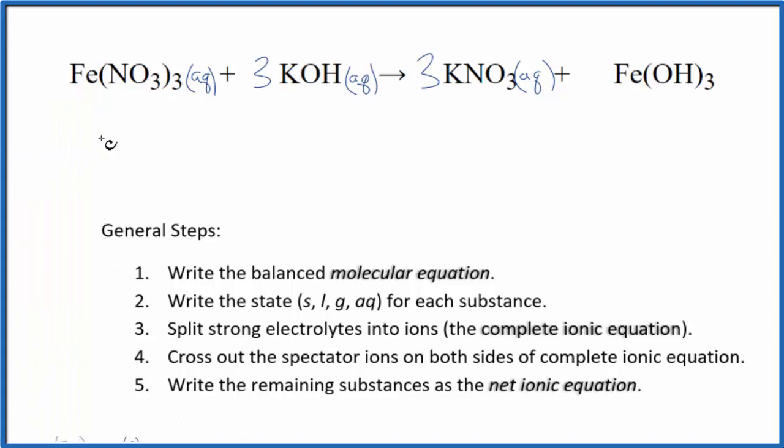So iron 3 hydroxide is insoluble in water. It won't dissolve. Because of that, these two react. We produce our solid iron 3 hydroxide. And that falls to the bottom of the test tube in a precipitation reaction.